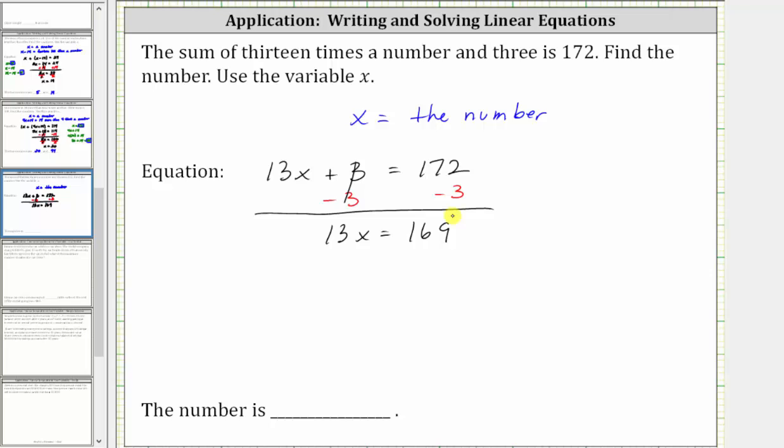The last step is to multiply or divide in order to solve for x. Since 13x means 13 times x, to undo the multiplication and solve for x, we divide both sides by 13. Simplifying, 13 divided by 13 simplifies to one. One times x is x. We have x is equal to 169 divided by 13, which is equal to 13.